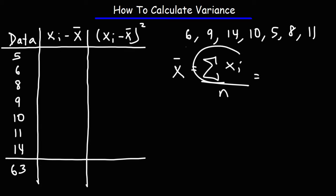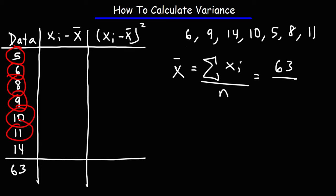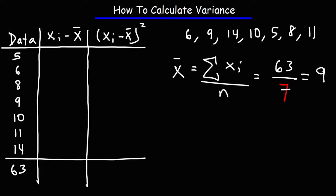So that's the sum of all the data points that we have. And if we calculate the number of data points — 1, 2, 3, 4, 5, 6, 7 — so n is 7 in this example. 63 divided by 7 is 9. So that's our sample mean.